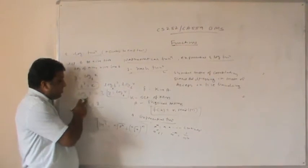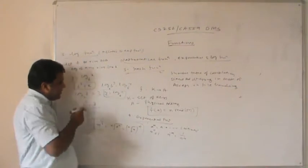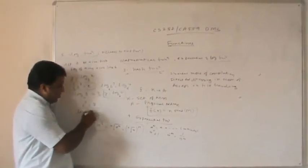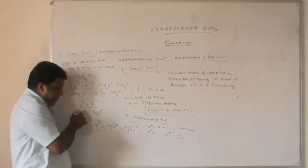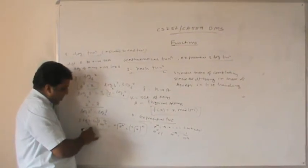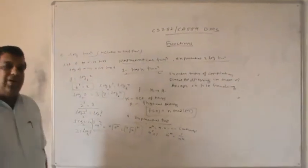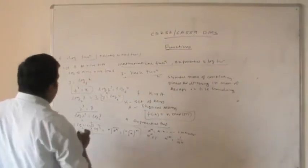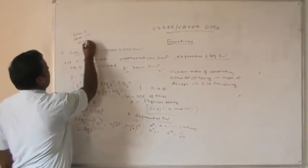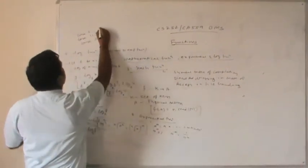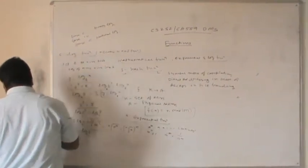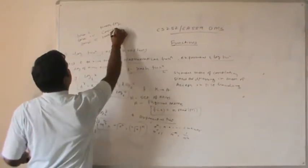Similarly, finding log_2(8) = 3: we take 2³ = 8 and apply log base 2 to both sides, giving log_2(2³) = log_2(8), so 3·1 = 3. There are three types of logarithmic bases: base 2 is called binary log, base e is called natural log, and base 10 is called common log.